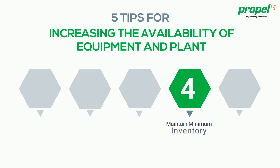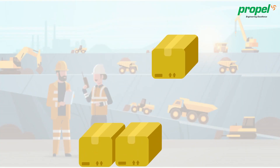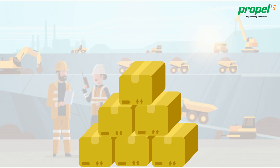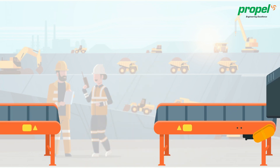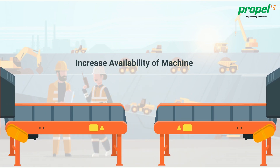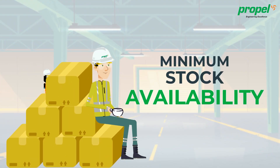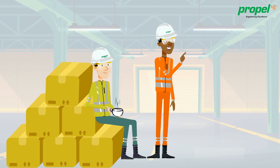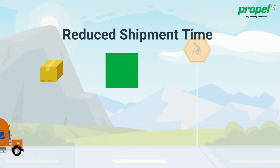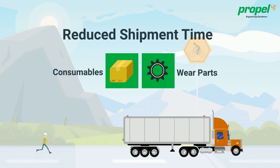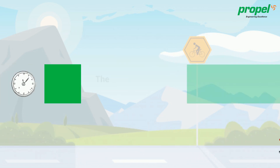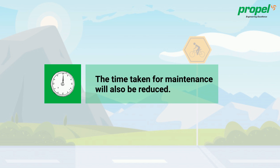Number 4: Maintain Minimum Inventory. It is important to stock up minimum inventory for every single machine that you possess. This will increase the availability of the machine. Parts can be replaced faster if minimum stock is available in-house. This will also reduce the shipment time of consumables and wear parts, and the time taken for maintenance will also be reduced.